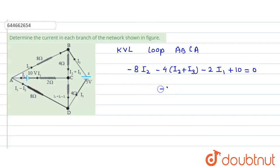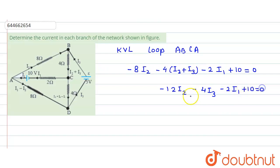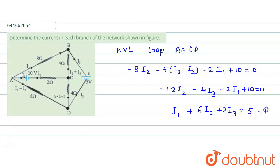Solving this expression gives: minus 12·i2 minus 4·i3 minus 2·i1 plus 10 equals zero. Dividing the whole expression by minus 2, we get: i1 + 6·i2 + 2·i3 = 5. This is Equation 1.